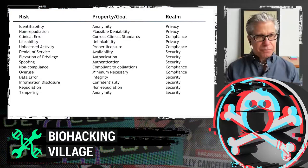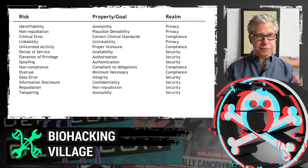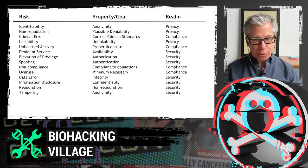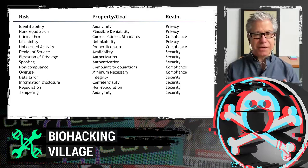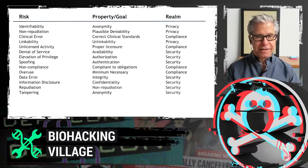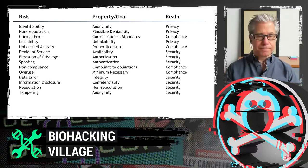For every risk there's a property and a goal, coming from a specific place. For example, Clinical Error — the risk of a clinician making a mistake that may otherwise have been prevented — has the property and goal of applying correct clinical standards, making sure the clinician both knows what they're doing and can do it at the moment they need to. That's in the realm of compliance. The slide sorts specific elements as to what the goal is and where it comes from.